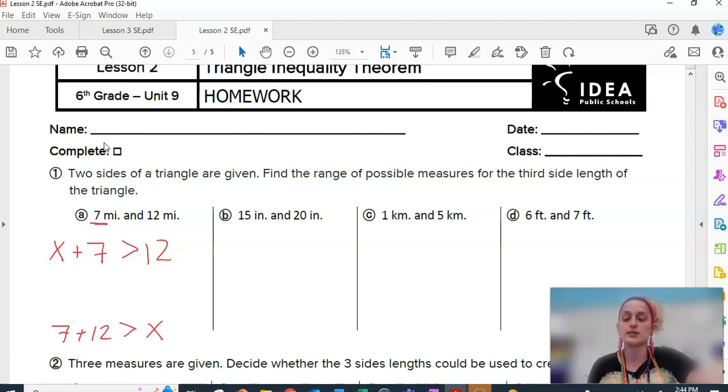So, then you're going to solve by isolating x. To get rid of this plus 7, we're going to do minus 7 to both sides. x is greater than what's 12 minus 7? That's 5. That's one of your two answers.